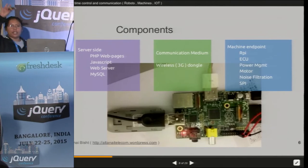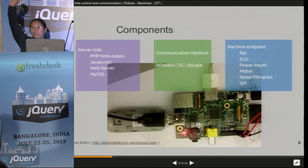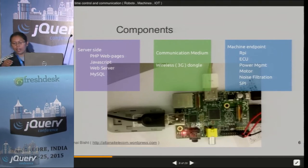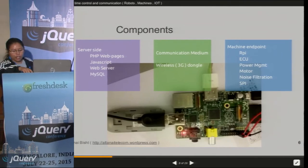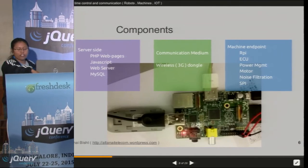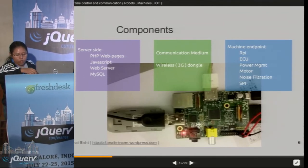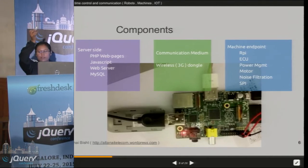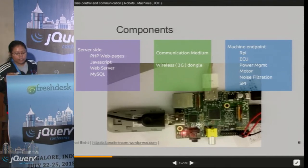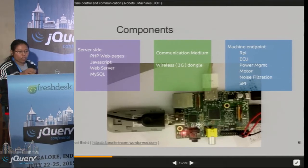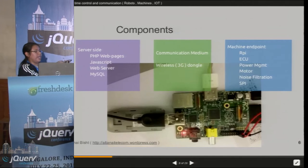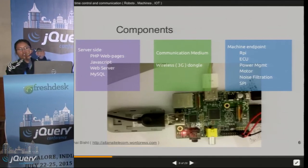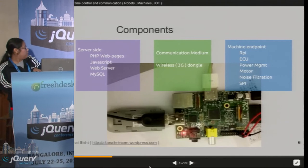I have the Raspberry Pi B model, I have an SD card, and for the communication I just use my 3G dongle. I could not bring the motor but the LEDs are there. I just control this using the web page.